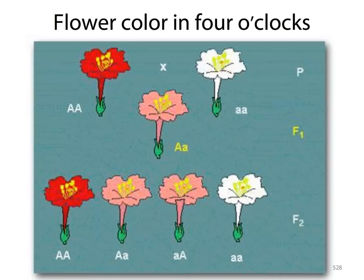Why is it not blending inheritance? If it was always blending and children were always a perfect intermediate to their parents, eventually everything would look the same — all heights, everything — especially through hundreds of years of generations. The best way to show this is through flowers. If you crossed a red with a white and got a pink, and if it was true blending, crossing pink with pink should give all pink. But in fact, if you cross F1 big A, little a with another F1 big A, little a, you get the F2 showing red again and white again. So it's not blending — your red and white appear again in the F2, which tells you something else is going on.